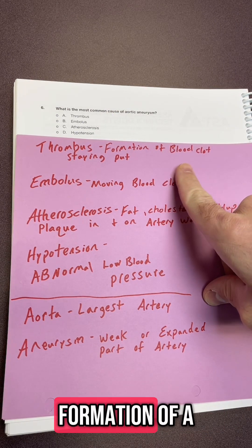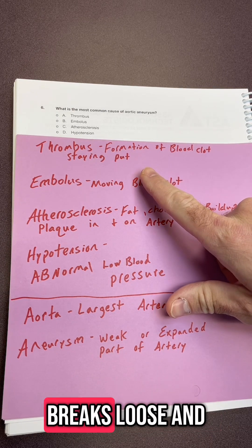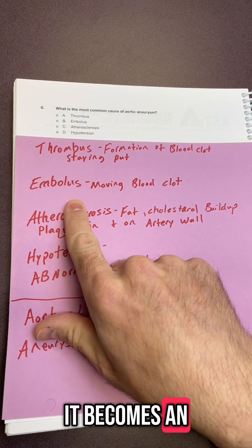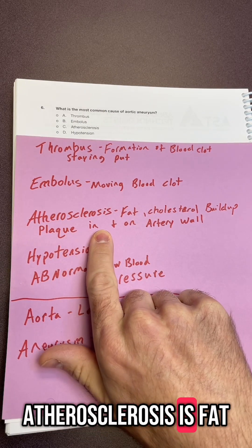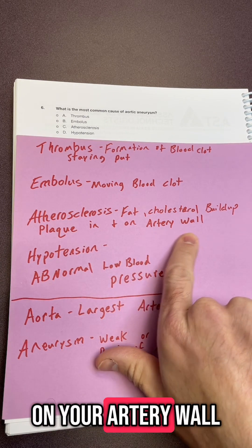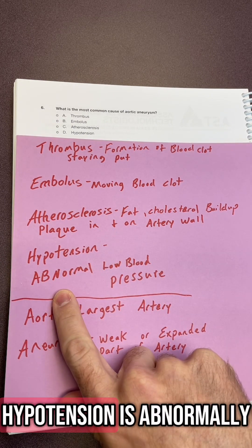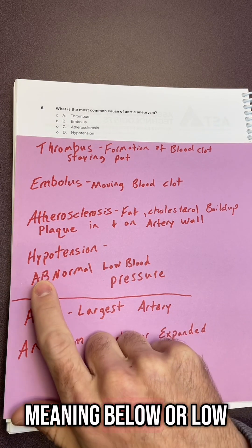Your thrombus is a formation of a blood clot and it stays put. Once that thrombus breaks loose and starts to move, it becomes an embolus. So it's a moving blood clot. Atherosclerosis is fat or cholesterol buildup, plaque in or on your artery wall. Hypotension is abnormally low blood pressure, hypo meaning below or low.